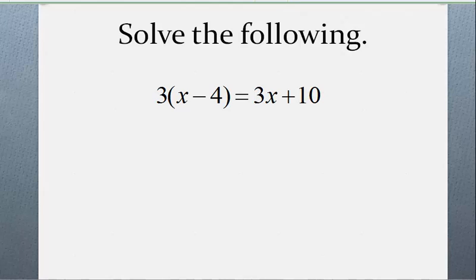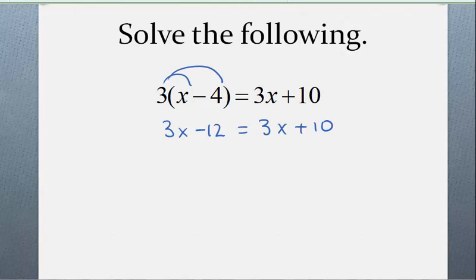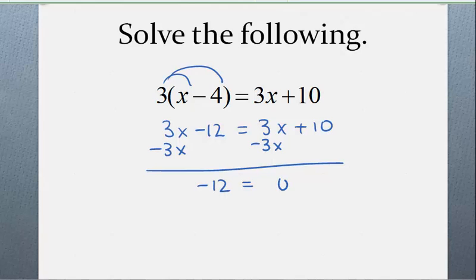Next example: 3 times the quantity x minus 4 equals 3x plus 10. If I distribute, 3 times x is 3x, and 3 times 4 is 12 with a minus sign in between. Then I have 3x plus 10 on the right. The left side and the right side are not identical, so I proceed and try to solve this. I subtract 3x from the left side and subtract 3x from the right side. My x's disappear from the left side, and I'm left with negative 12. My x's also disappear from the right side, and I'm left with 10.